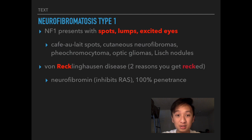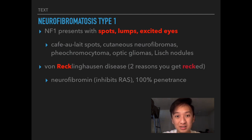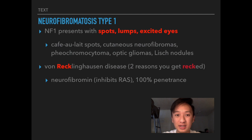There are two additional facts about NF Type 1, remembered using its alternate name, von Recklinghausen disease. The 'wreck' in Recklinghausen helps recall that NF Type 1 will 'wreck' you in two ways. The first way is 100% penetrance — if you have the NF1 mutated gene, you are 100% guaranteed to have the disease.